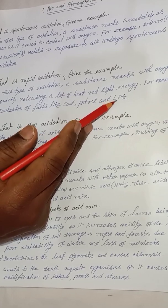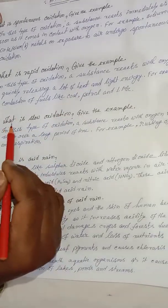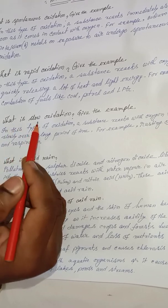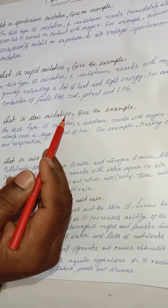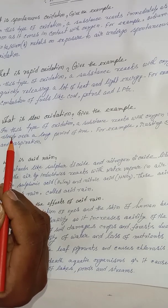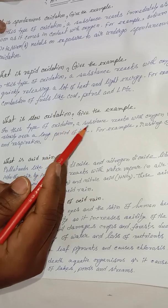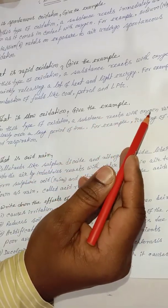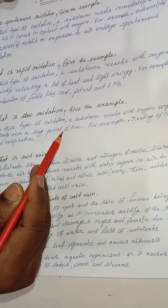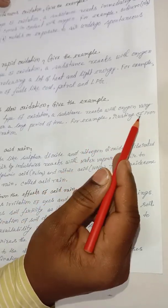Next question: what is slow oxidation? Give an example. In this type of oxidation reaction, a substance reacts with oxygen very slowly over a long period of time. For example, rusting of iron.